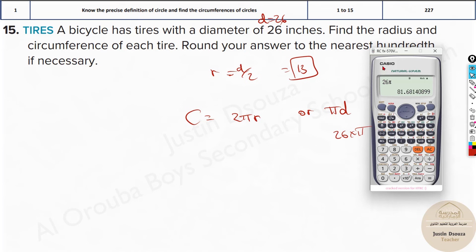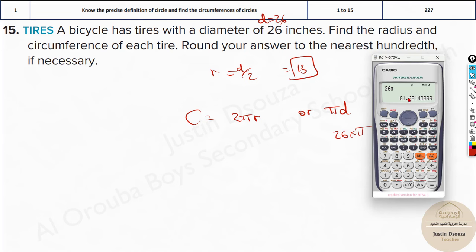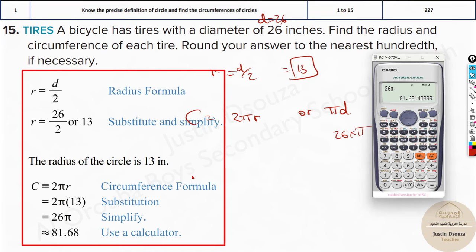Now, here they have told nearest hundredth, you need to round it off. So use your calculators here. You will get π if you press shift and this symbol. If you press equal to, you will get the same thing. And now, nearest hundredth. Hundredth has two zeros, so 1, 2, two decimal points. So you should write 81.68. That's the answer.